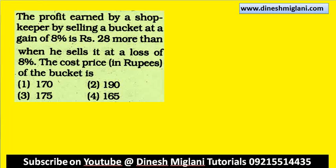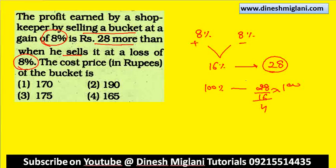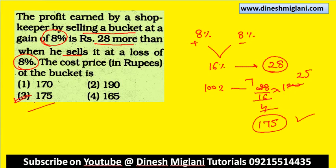The profit earned by a shopkeeper by selling a bucket at 8% profit is 28 more than when he sells it at a loss of 8%. We have to find the cost price. First he is getting 8% profit, now 8% loss — the difference is 16%. That 16% is equal to 28 rupees. So cost price = 28 divided by 16 into 100 = 175. Hence third one is the answer.